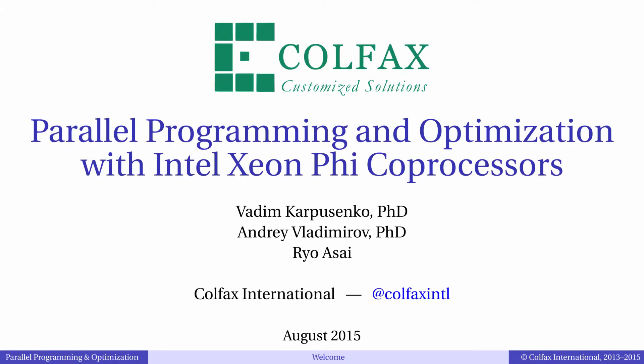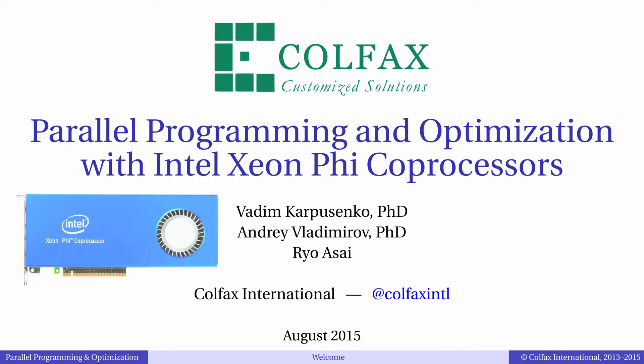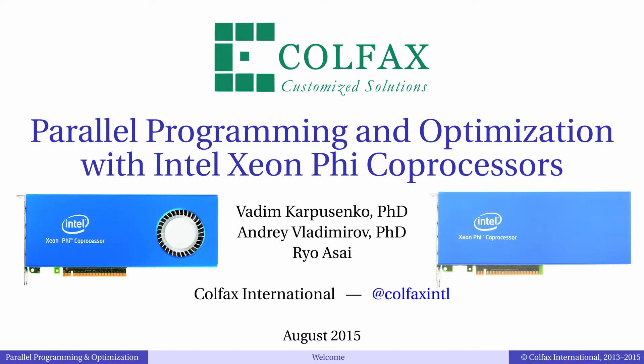This is the introductory video for the Colfax Developer Training video course titled Parallel Programming and Optimization with Intel Xeon Phi Coprocessors. In this course we will discuss programming models and optimization techniques for the computing accelerator known as the Intel Xeon Phi Coprocessor.